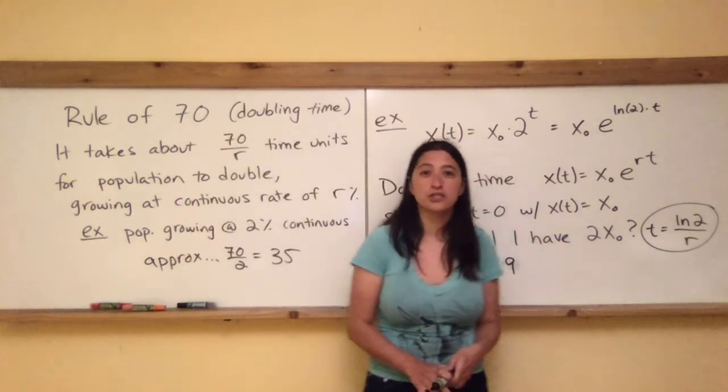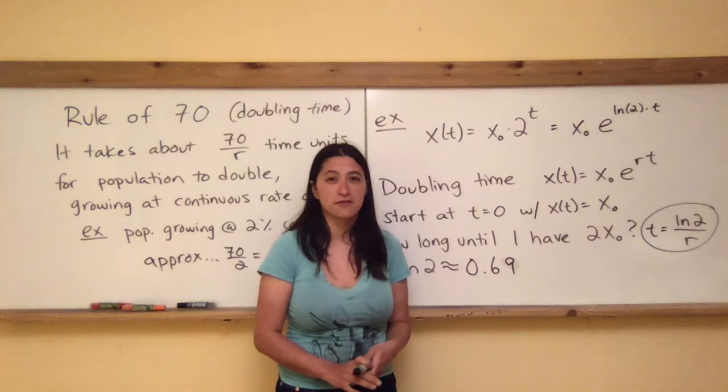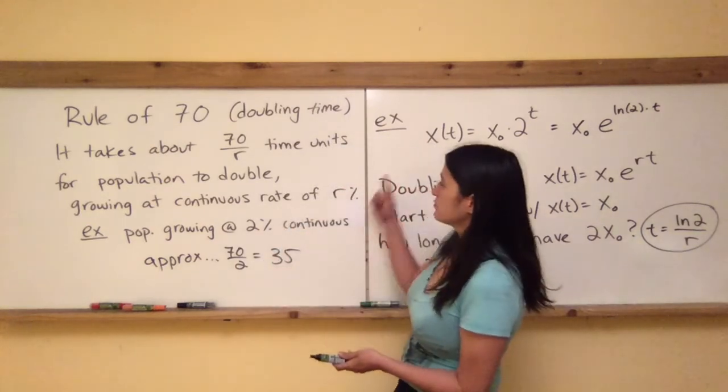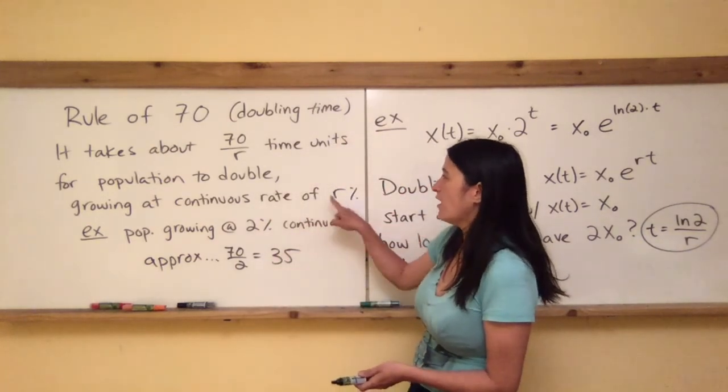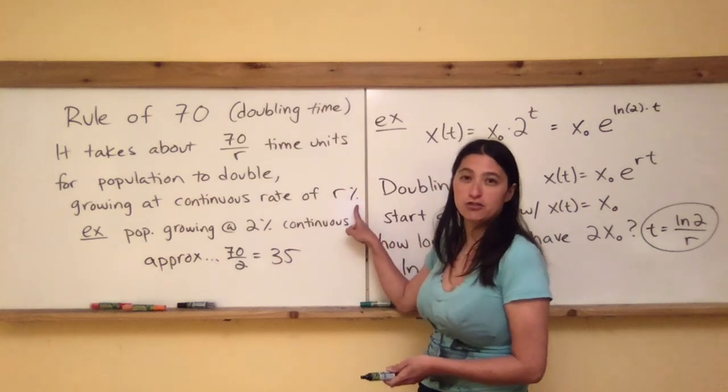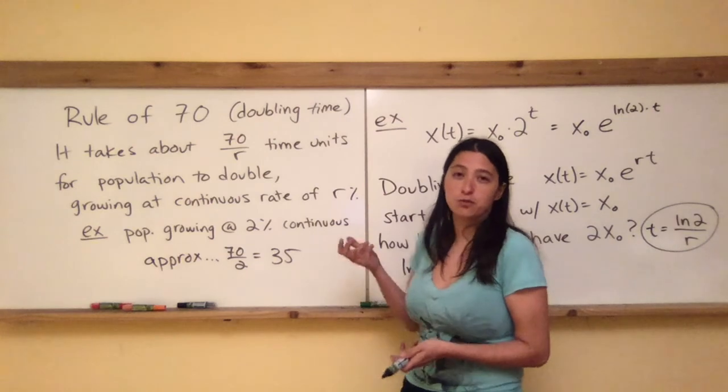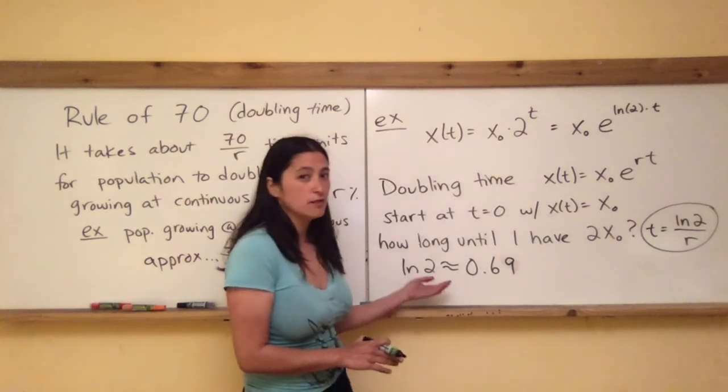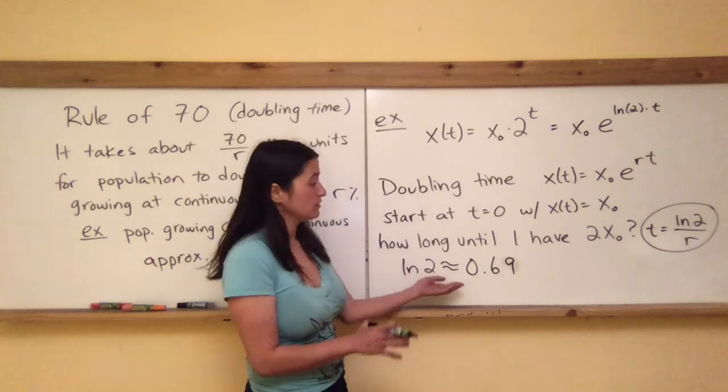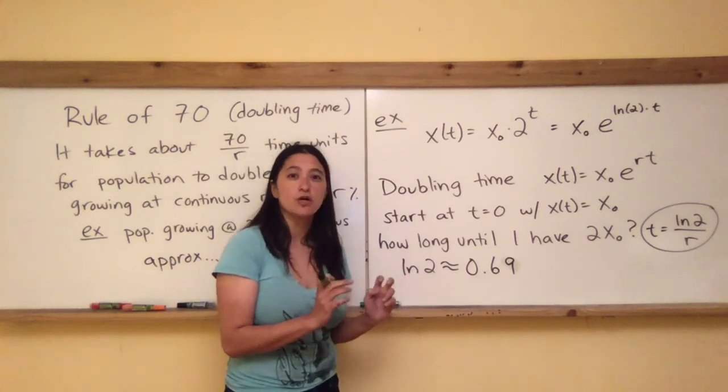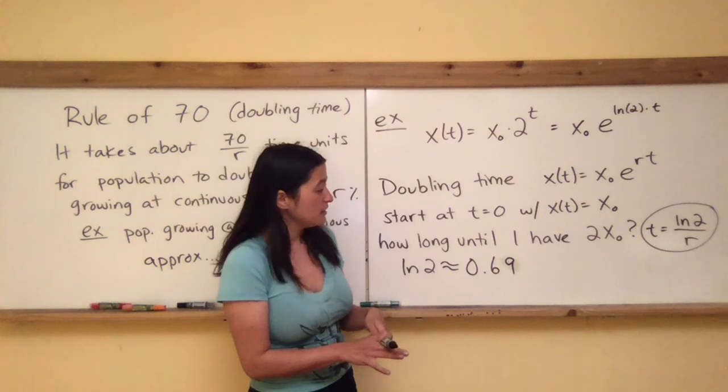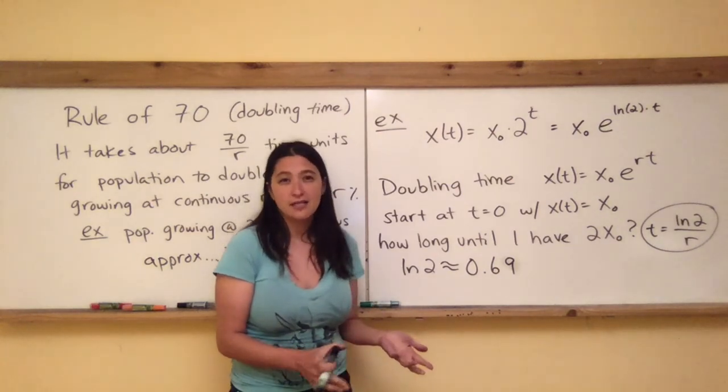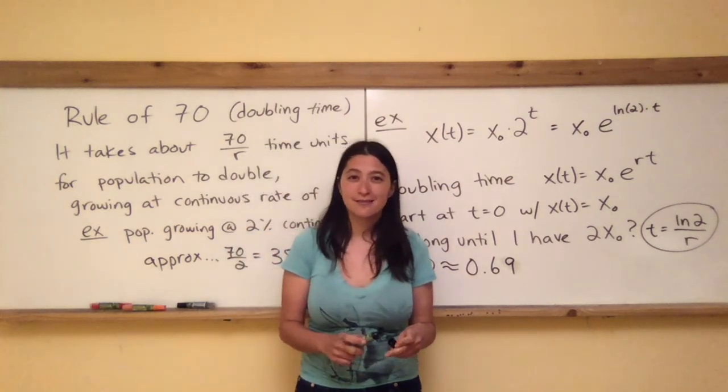That's why the rule of 70 works is because the log of 2 is about 0.7. It's 0.69... And then R, you see, R is usually as a proportion rather than a percent. And that's why the rule says growing at a continuous rate of R percent. Because remember that when we do percents, we take the actual rate and multiply it by 100%. And so here, same thing for the log 2. We would take the log 2 and multiply it by that conceptual 100%, and then we would get about 70. And that's why the rule of 70 works. Cool, huh?